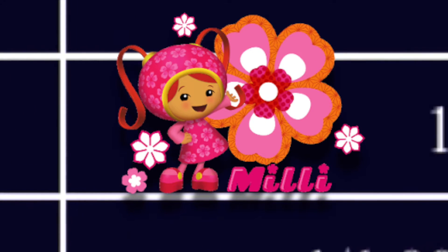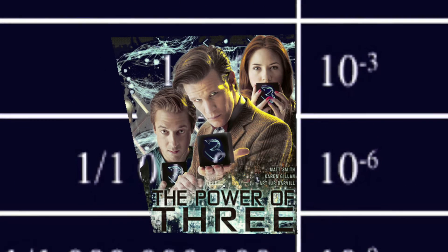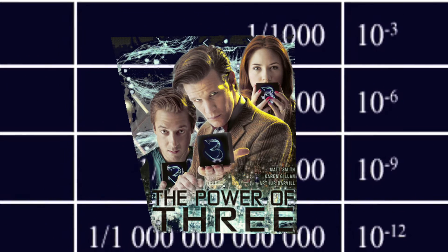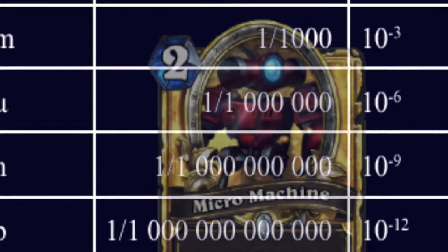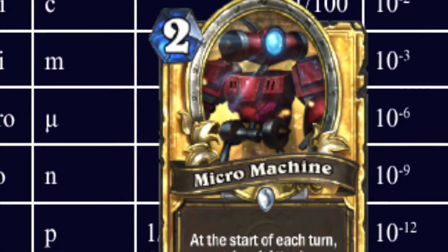And one one-thousandth equals 10 to the negative three power. Once you hit that negative third power, subsequent prefixes jump by powers of three. So the next prefix micro stands for 10 to the negative six, or one one-millionth of something.